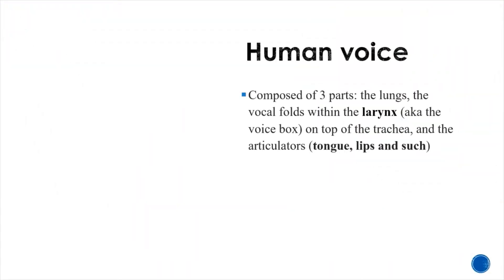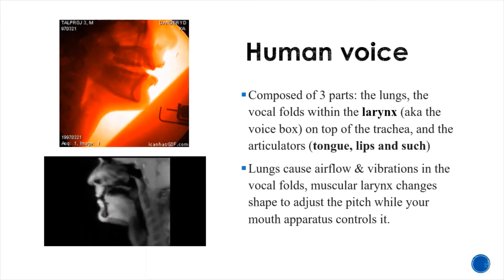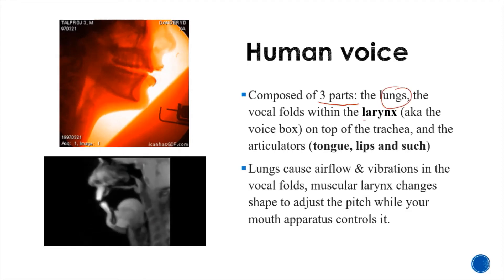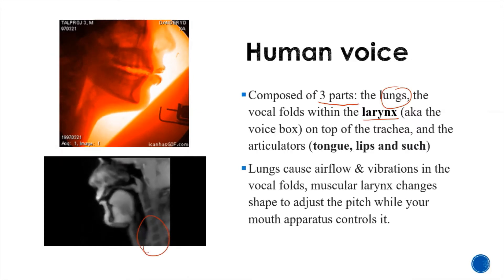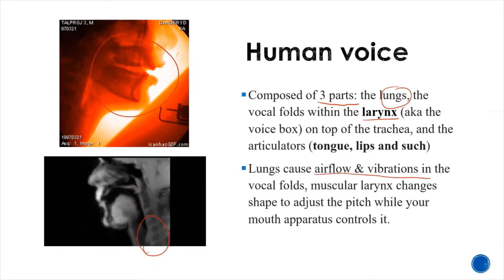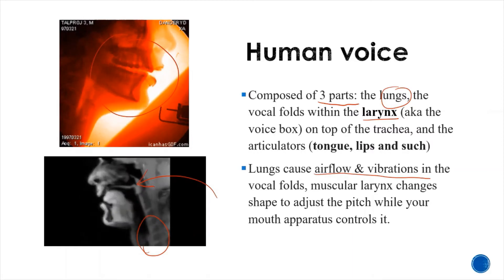Humans have the most developed vocal abilities of all animals. We can modulate sounds to create words and communicate very frequently using them. Human voice is composed of three parts: lungs; vocal folds with larynx or voice box on top of the cartilage; and the articulators — tongue, lips, and such elements I'm using currently. Lungs cause airflow and vibrations in the vocal folds. The muscular larynx changes shape to adjust the pitch while your mouth apparatus controls it.